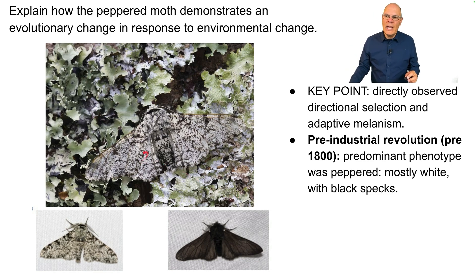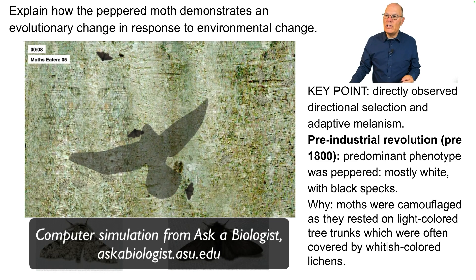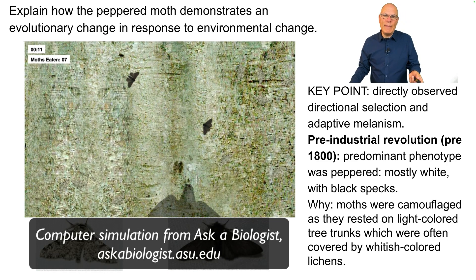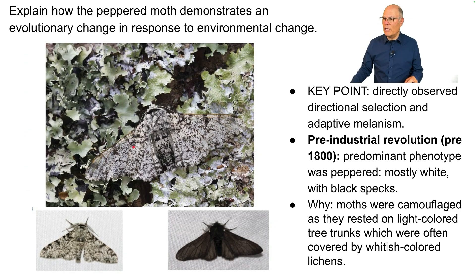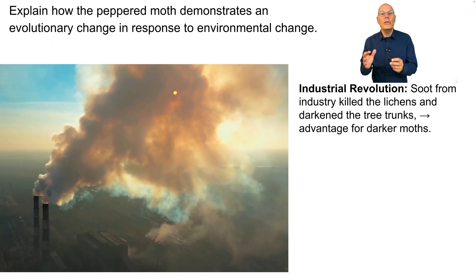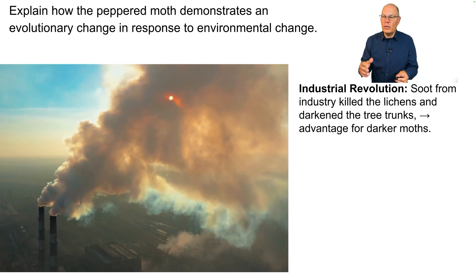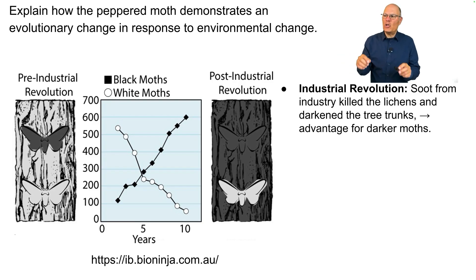Before the Industrial Revolution, almost all moths were peppered because that was a form of adaptive coloration — the moths were camouflaged as they rested on light-colored tree trunks, often covered by whitish lichens. With the Industrial Revolution, soot from factories landed on the trees, killed the lichens, and darkened the tree trunks. This created a selective advantage for the dark-colored moths.